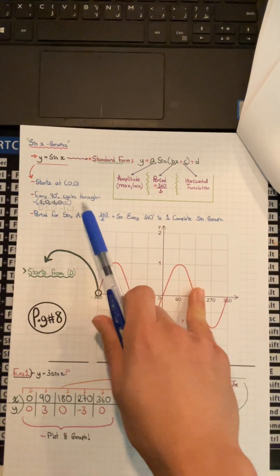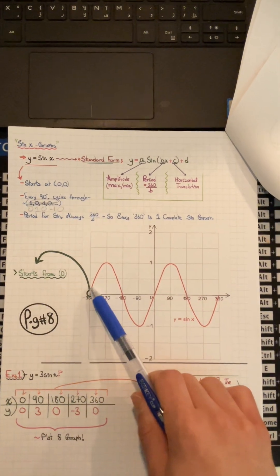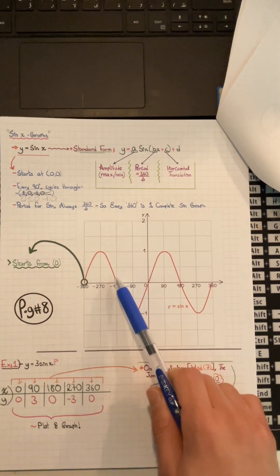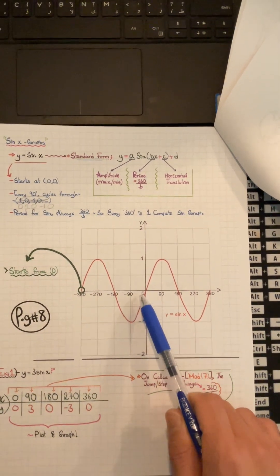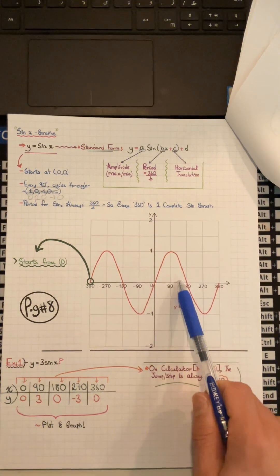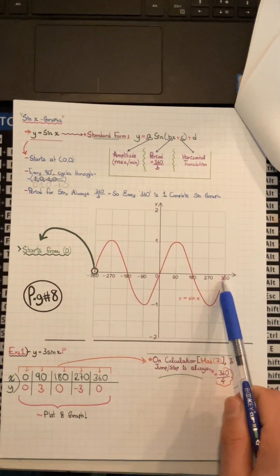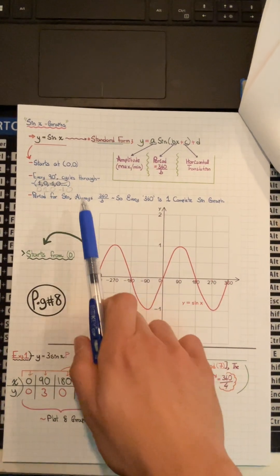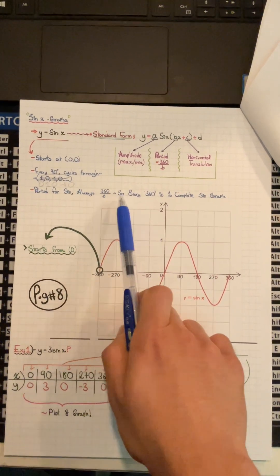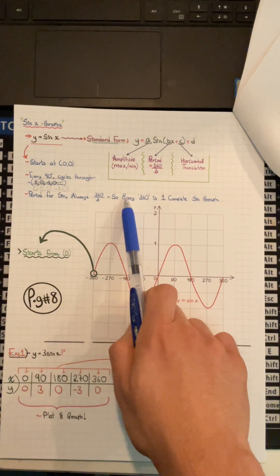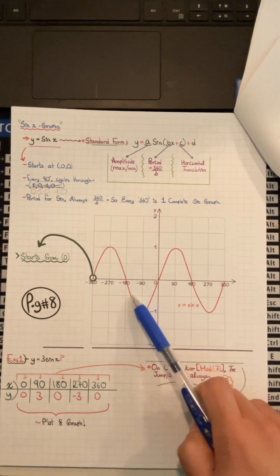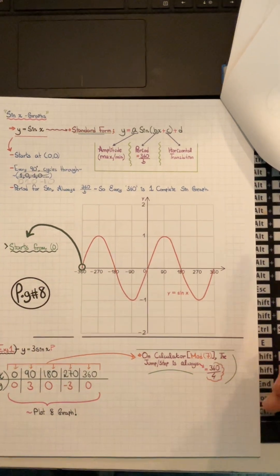Every 90 degrees, sin x will cycle through: 0, to maximum, to 0, to minimum, to 0, to maximum, to 0, to minimum, to 0. The period for sin is always 360 over b, so every 360 degrees is one complete sin graph.